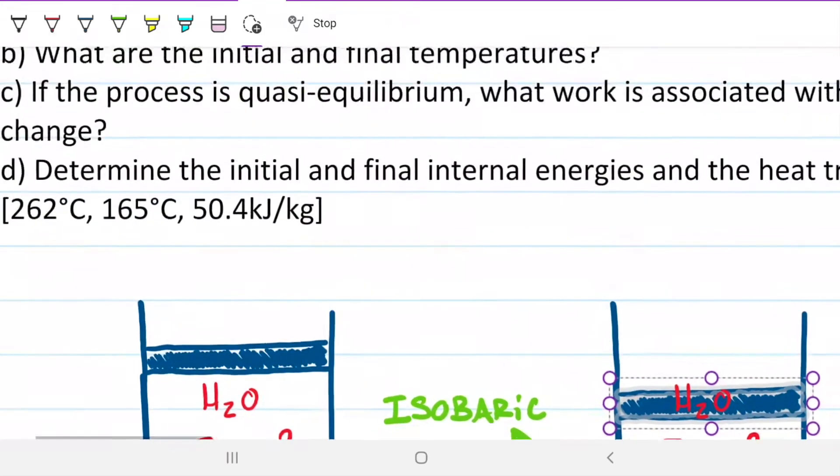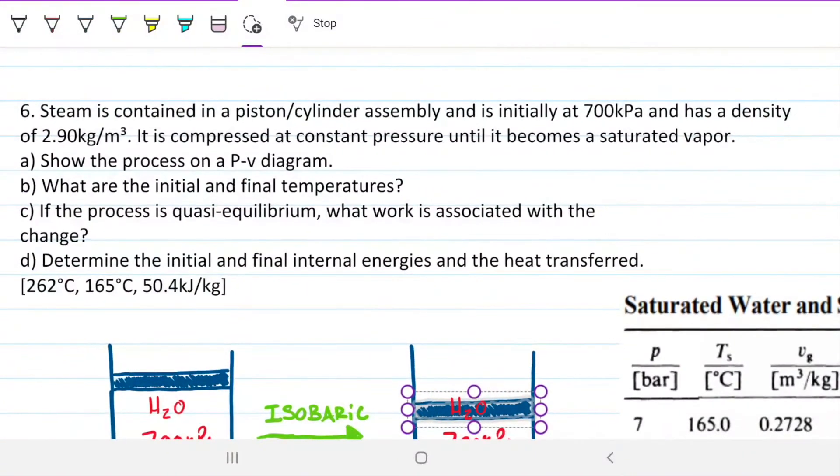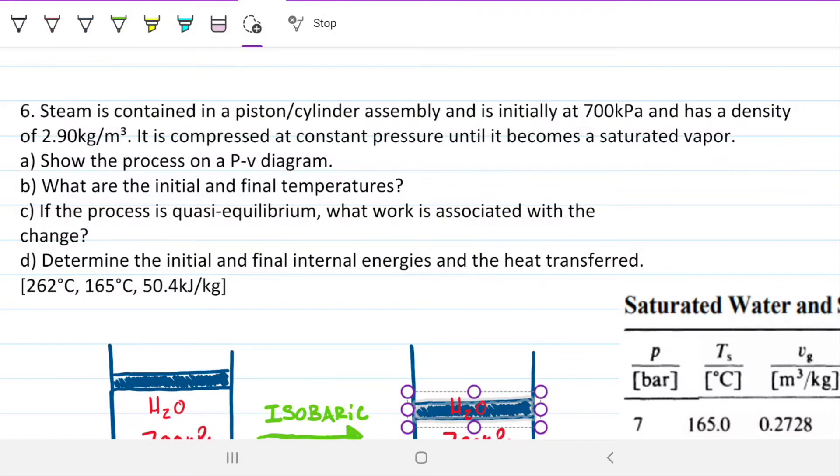Problem statement reads: Steam is contained in a piston cylinder assembly and is initially at 700 kilopascals with a density of 2.9 kilograms per meter cubed. Note that the units here are exactly the inverse of the specific volume. It is compressed at a constant pressure, the isobaric process, until it becomes a saturated vapor.